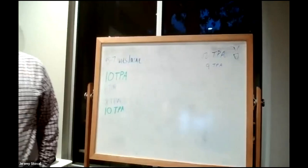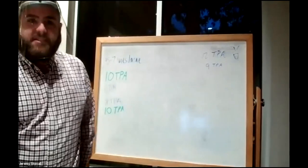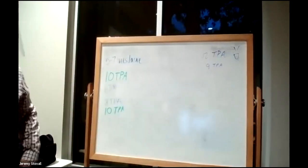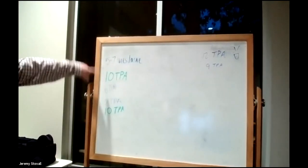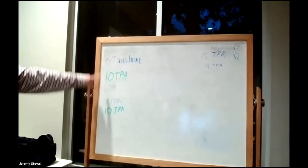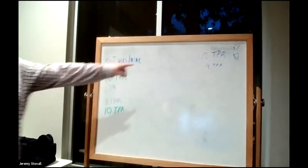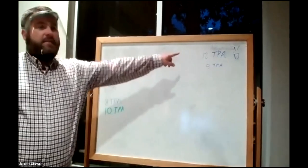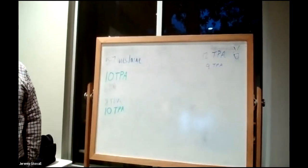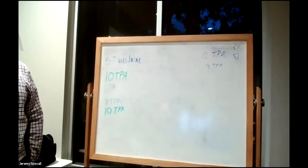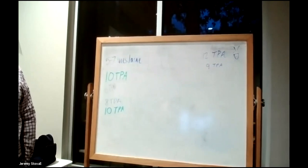We can see all your different answers: five to seven, six, eight, ten, ten, nine, and twelve trees per acre. You all came up with a similar range of trees per acre.